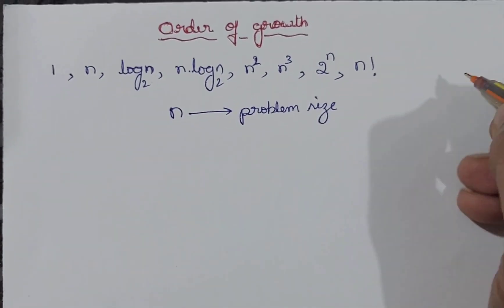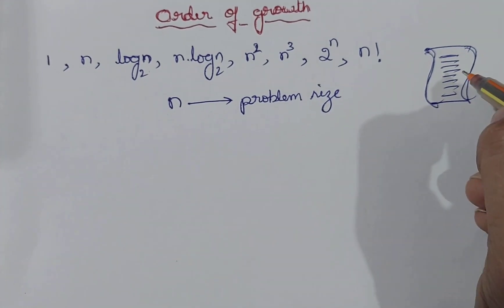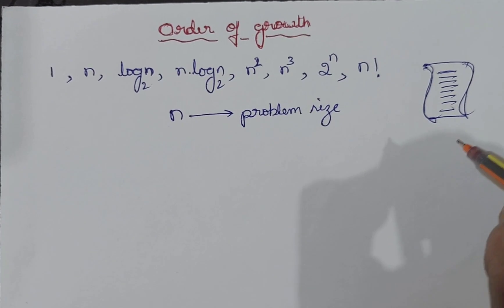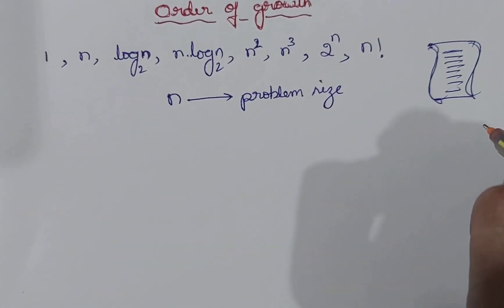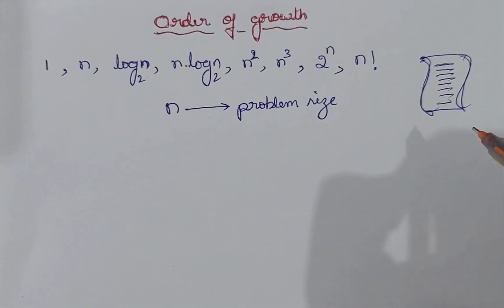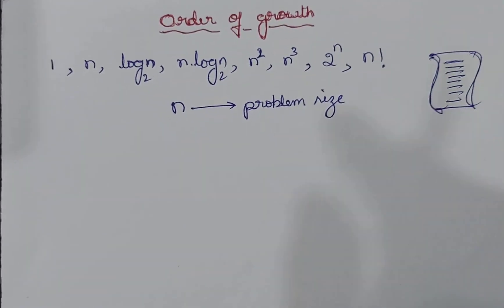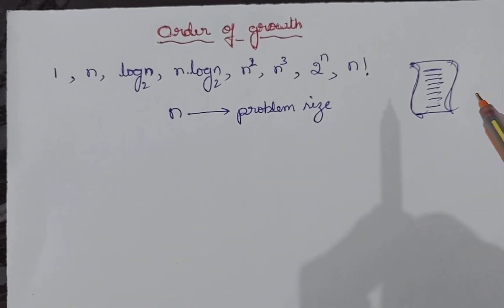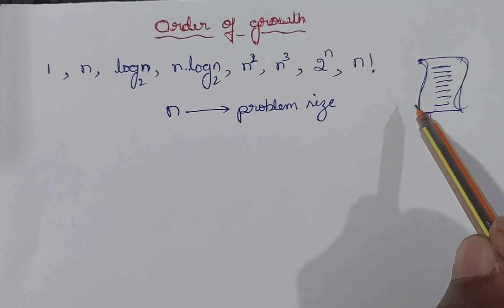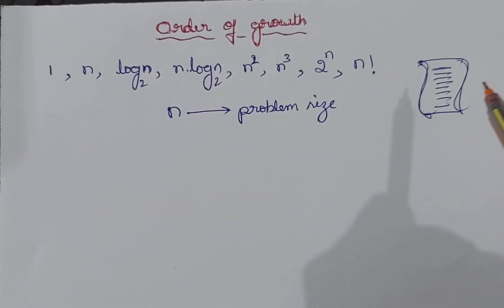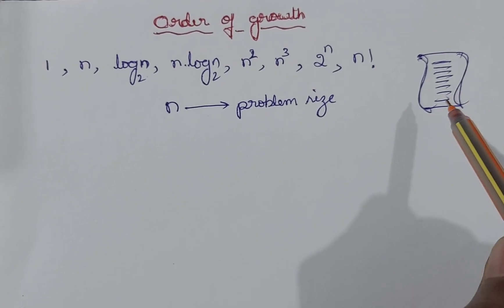Let us see what we mean by problem size. Assume we have a program performing an addition operation on 2 inputs — the problem size is 2. Similarly, if a program is sorting 10 elements, the problem size is 10. If a program is searching for 1 key element among 100 elements, the problem size is 100. In general, the number of inputs on which our algorithm works is called the problem size.